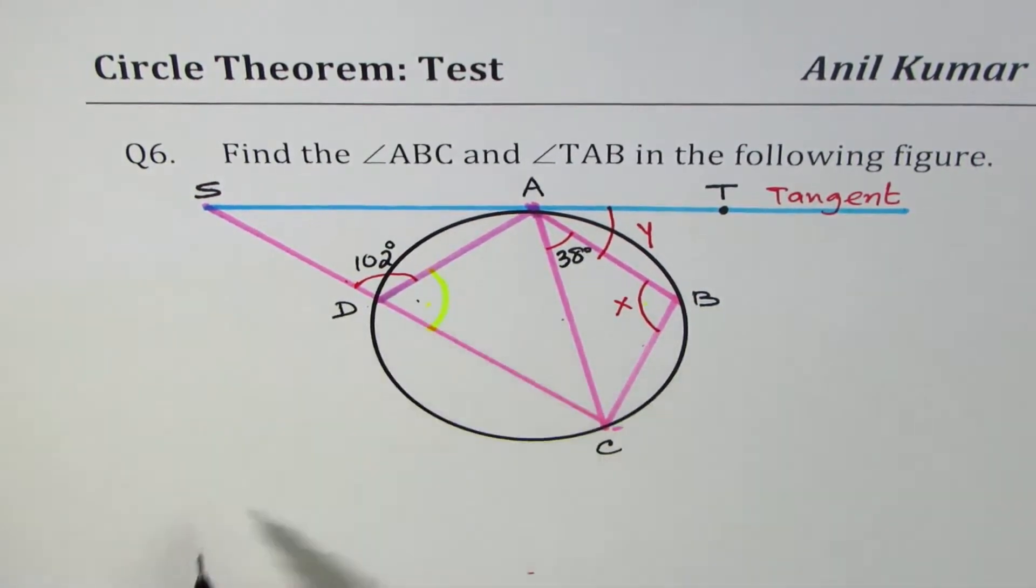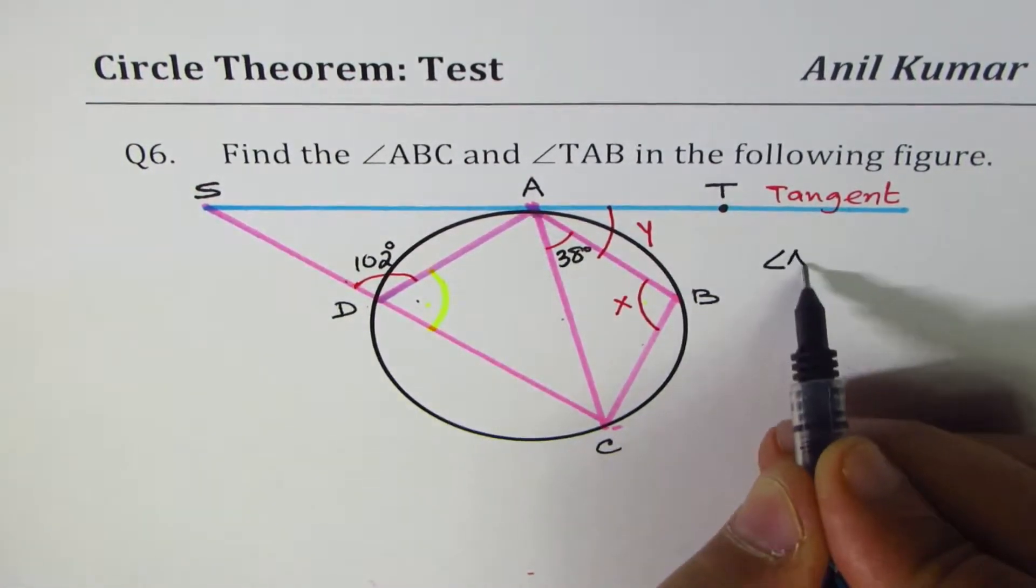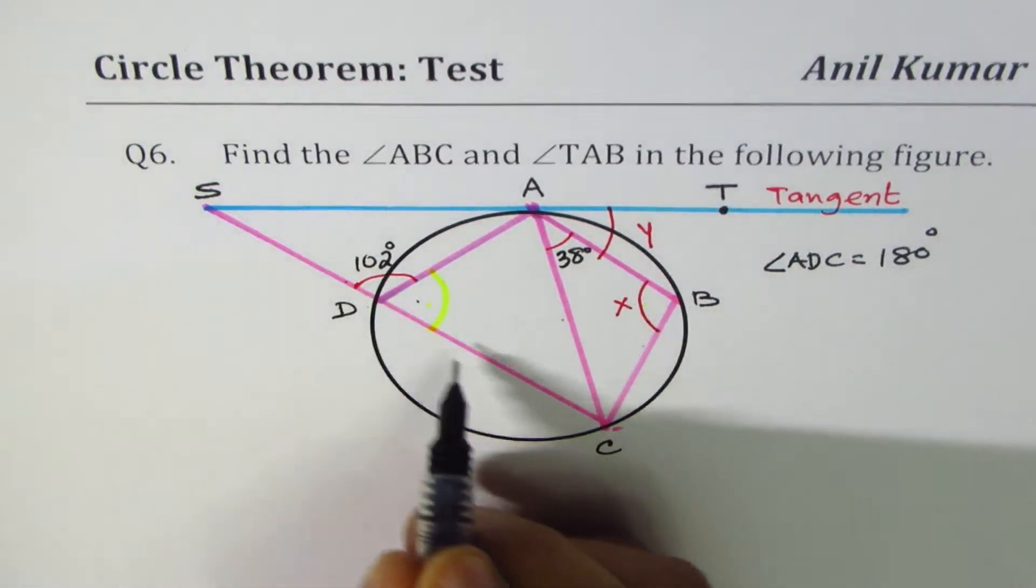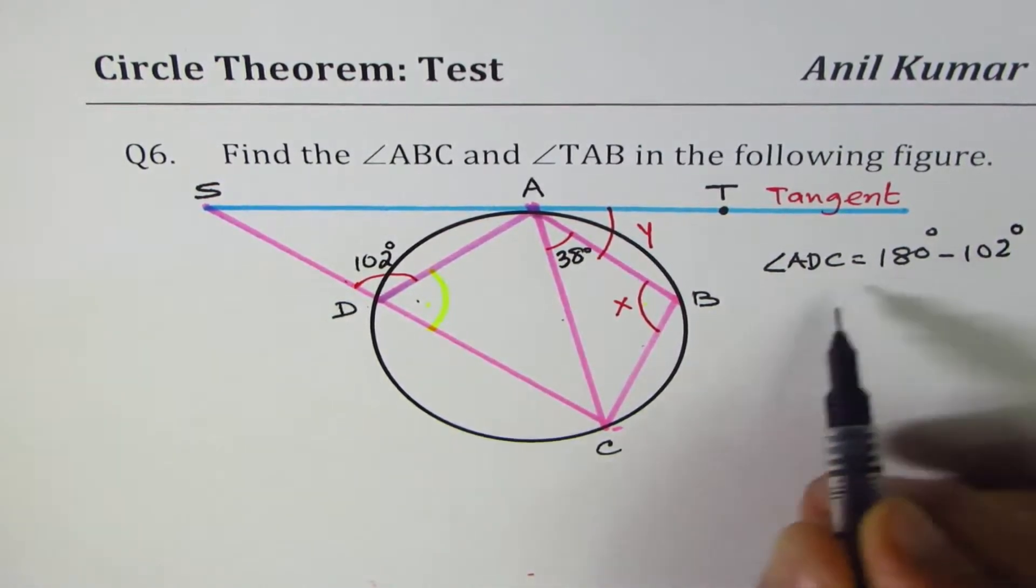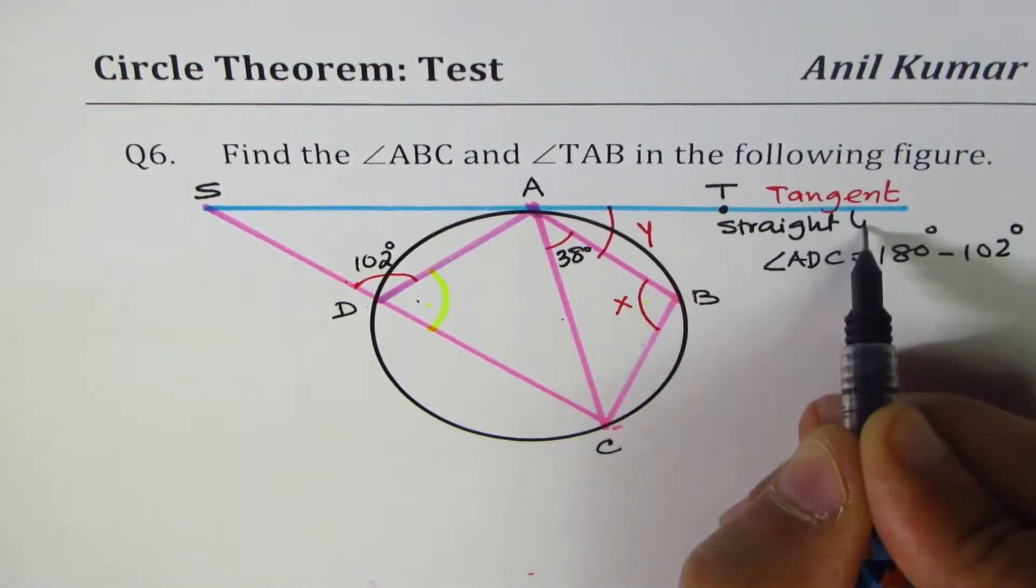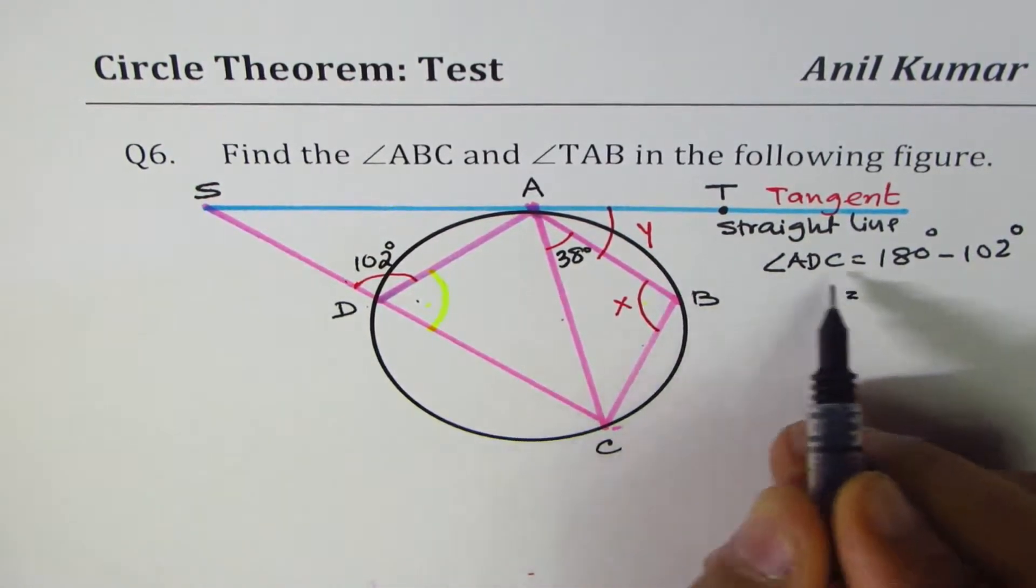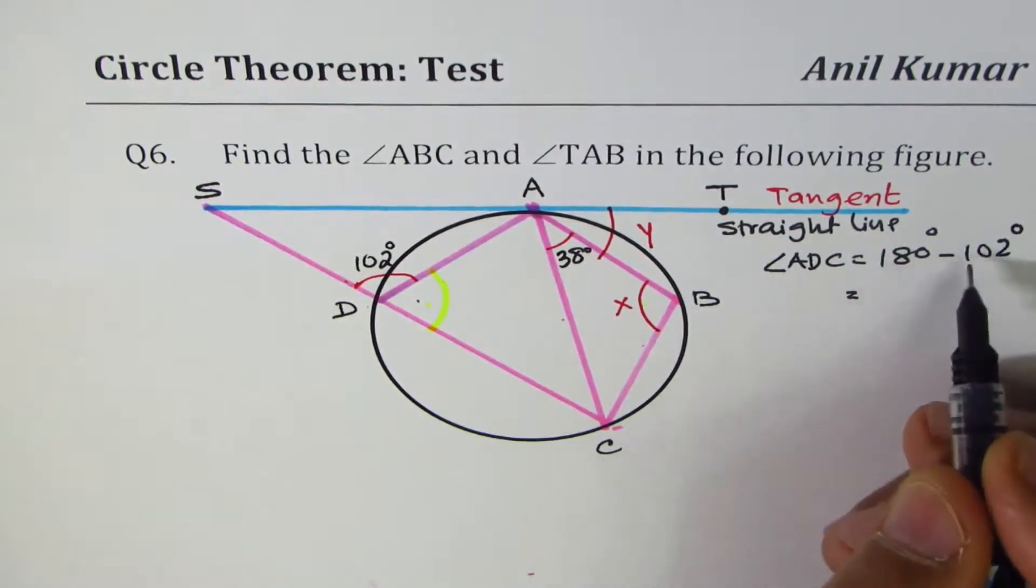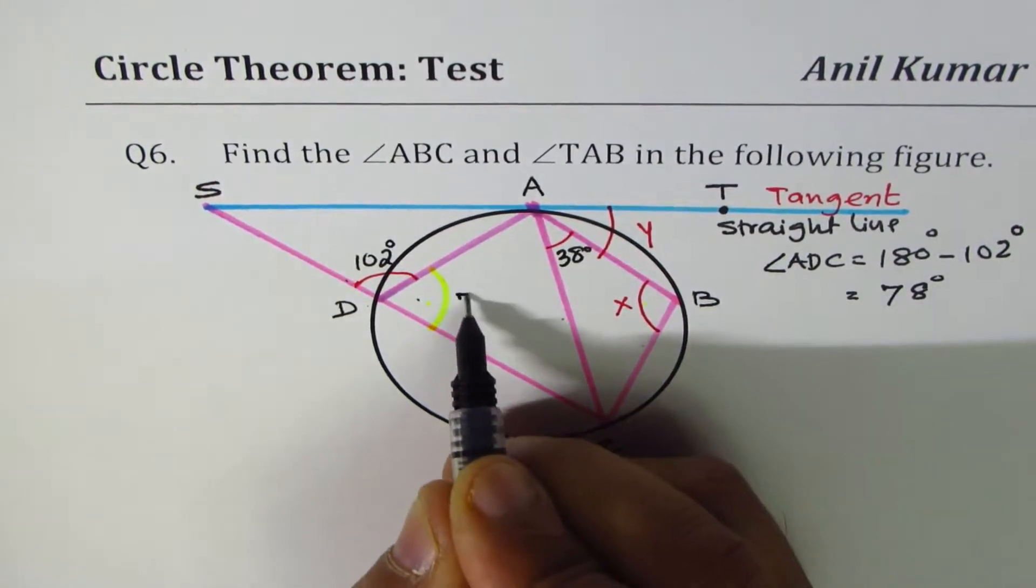So, let's figure out what this angle is. Angle ADC is equal to 180 degrees, because it's a linear angle, straight line, minus 102 degrees. The reason is straight line. It makes 180 degrees. So, that is how you can get ADC, 180 minus 102. So, 10 take away 2 is 8, 78 degrees. So, this is 78 degrees.